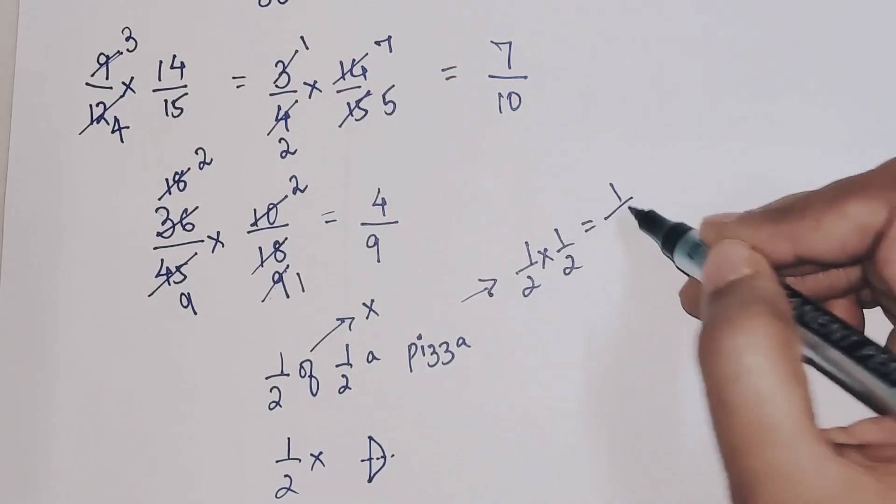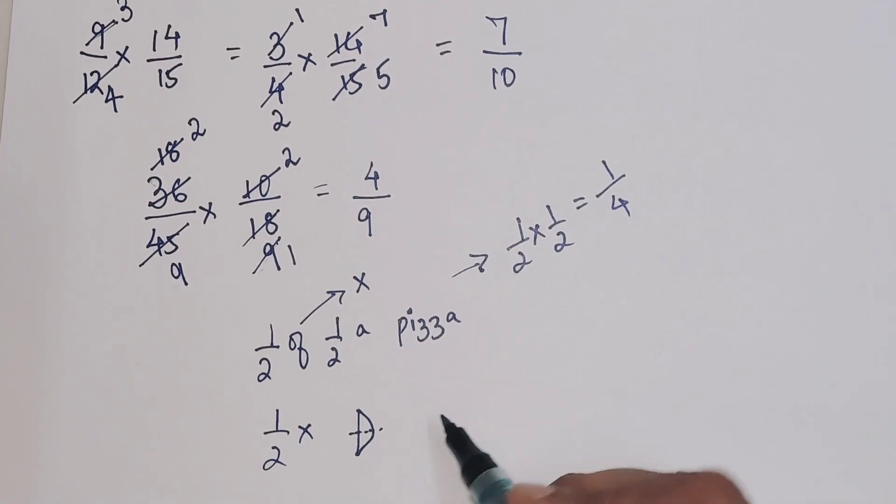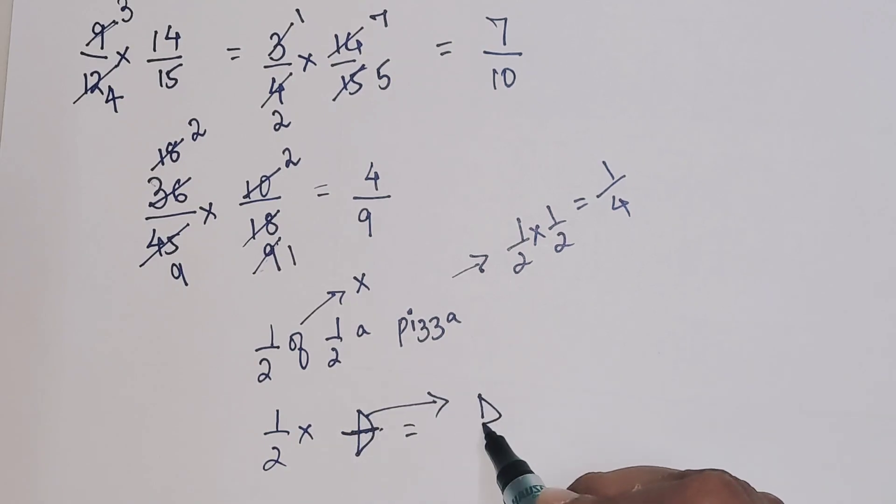Basically if you do it in mathematical form, this comes out to be half into half. That gets you 1 into 1 gets you 1, and 2 into 2 gets you 4. Now if I wanted half of a pizza, my final answer here would be half of this, that would be nothing but 1 fourth. It is just 1 fourth of the pizza.